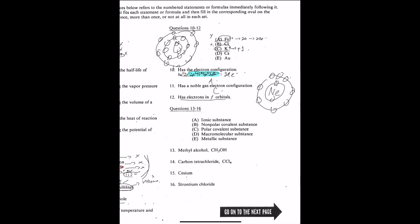Number 12 has electrons in F orbitals. An element that has electrons in F orbitals should be the heaviest one, or rather the one with the highest atomic number. If you just look at the word choices, you can immediately know that the answer would be E or gold.